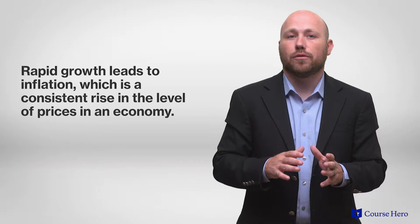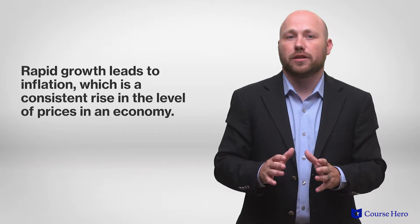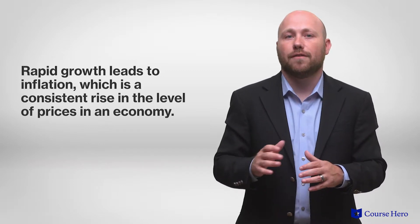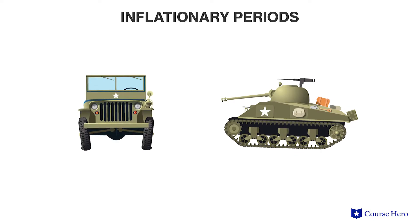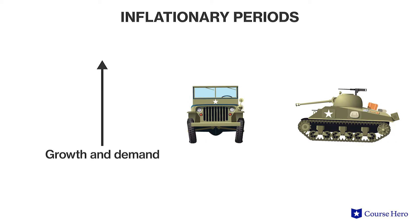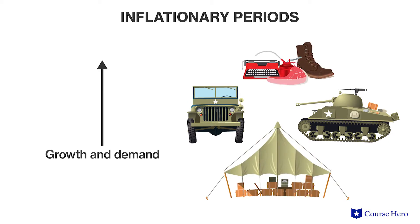Growth above 2–3% per year, at least for the United States, can result in undesirable consequences for an economy. First, rapid growth leads to inflation, which is a consistent rise in the level of prices in an economy. Two inflationary periods took place during World War I and World War II, when growth and increases in aggregate demand were rising rapidly due to needs from the war effort.